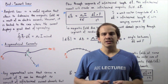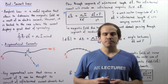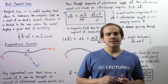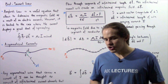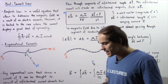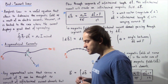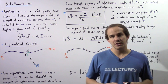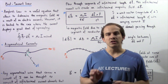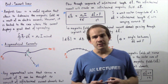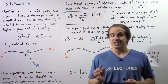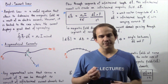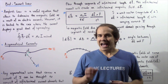In our discussion on the relationship between magnetism and electricity, we discussed a very important law known as Ampere's Law. Ampere's Law essentially gives us a fundamental relationship between electric currents and magnetic fields — in other words, it tells us that electric currents create magnetic fields.